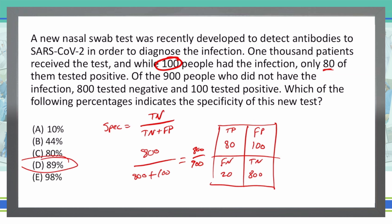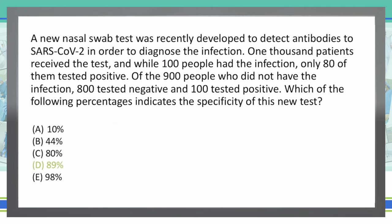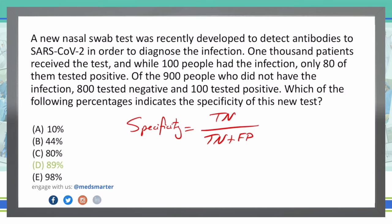That comes out to approximately 89%, so my final answer is 89%, or D — and D is the correct answer. High specificity gives us the opportunity for people who are healthy to test negative and know that they are truly negative and not undergo unnecessary treatments.